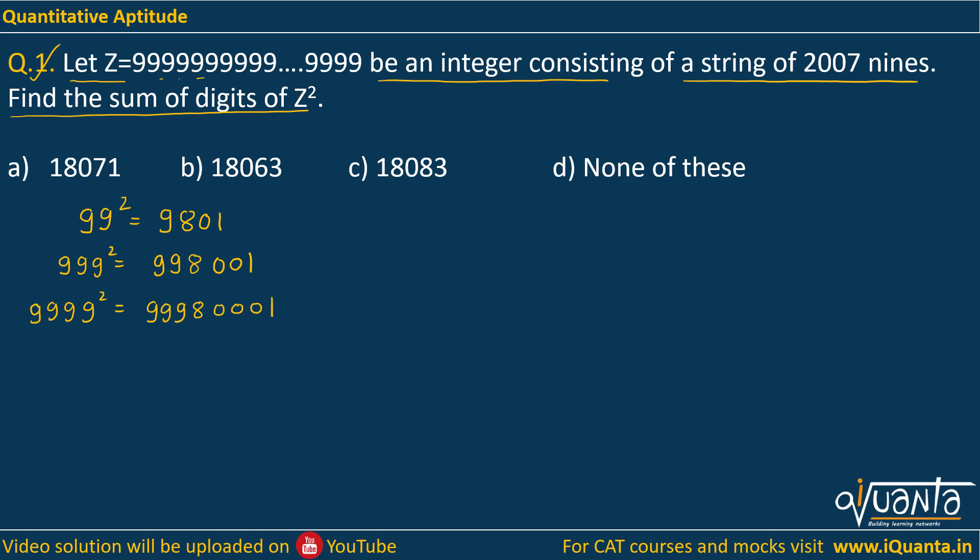So here we can see a pattern: if the number is 99, then we'll be having one nine, we'll have one eight, one zero, and this one. If we have three nines multiplied to three nines, that means triple nine squared, we'll be getting two nines, then a single eight, then two zeros, then one. Then if we multiply 9999, if we find out its square, it will be three times nine, then a single eight, then we'll have three zeros, then one.